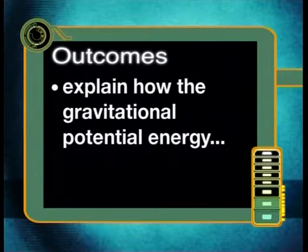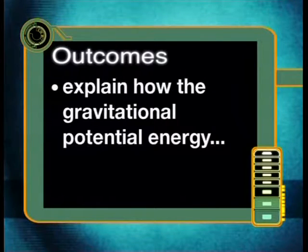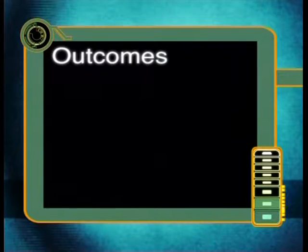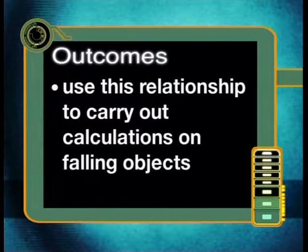By the end of this lesson, you should be able to explain how the gravitational potential energy and the kinetic energy of falling objects are related, and use this relationship to carry out calculations on falling objects. Let's begin with another look at a familiar experiment: dropping a ball from a given height.